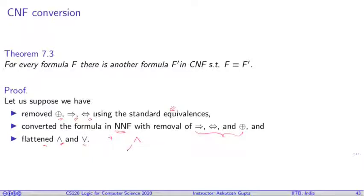What do I mean by flattening? Suppose we have this situation, we have a conjunction, and there are two conjunctions below them. We have a formula F1, F2, F3, F4, what we do, we create one conjunction with F1, F2, F3, and F4.